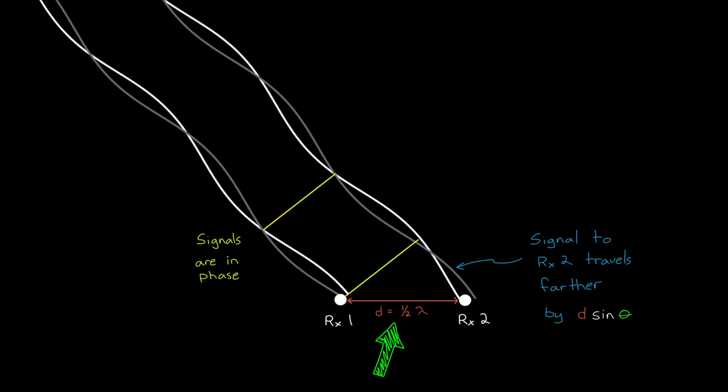In fact, we can show with some trig that the signal has to travel an extra d sin theta farther, where d is half the wavelength of the signal, and theta is the angle between the object and the direction the radar is facing. That's the angle we're trying to measure. So if we sample the IQ signals from each antenna at the same time, we can determine what the phase difference is between the two, which allows us to determine the angle to the object. How cool is that?